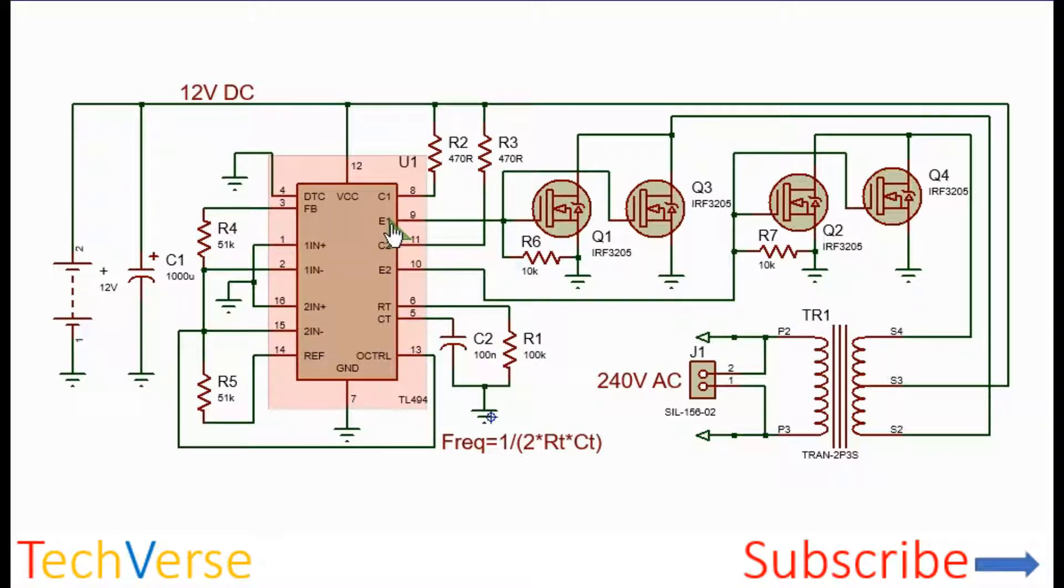So to power the MOSFETs, the open emitters E1 and E2 are connected to the gates. So since the IC is operating in push-pull mode, when E1 is high, Q1 and Q3 will conduct and current will flow through the positive power supply through one half of the primary winding through the MOSFETs and to ground.